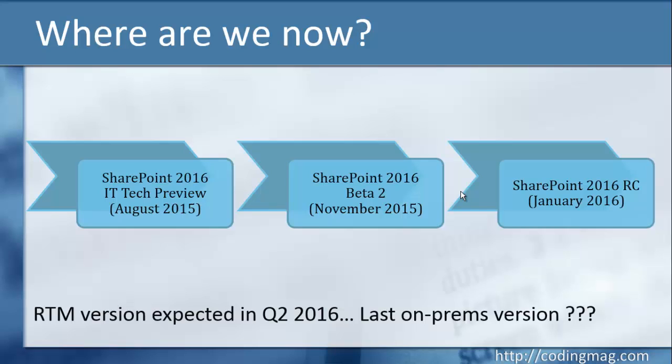You can consider the release candidate as a beta 3 version — it is actually a patch to the beta 2 version. So if you want to install it, you should first install beta 2 and then patch it to the release candidate. The RTM version is expected in quarter 2 of 2016.